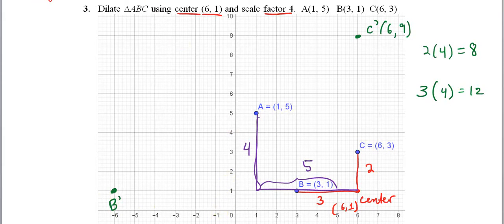And for A prime, this is actually going to run me off of the page, but we can still do this. To figure out what A prime is, I'm going to go 5 – that's this horizontal distance here – times 4, which is 20, and that's going to go to the left. Because from the center to A is 5 left and 4 up.